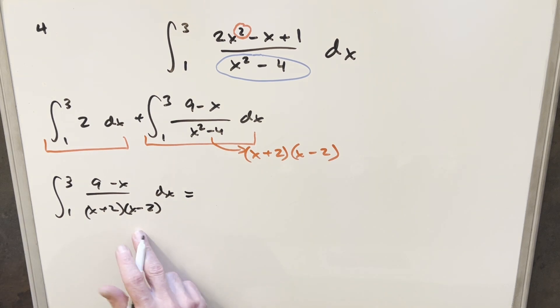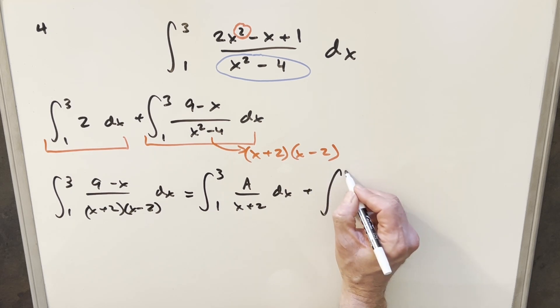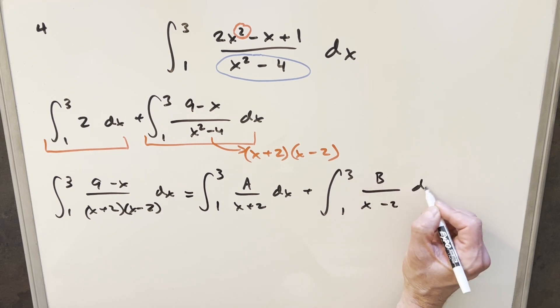So normally what I want to do here with this is just do partial fractions and split it into two integrals. So for our first one, we'll just have this x plus two. And then we'll have A in the numerator that we can solve for later. And then for the second one, we're going from one to three, x minus two, and we'll have B in the numerator.